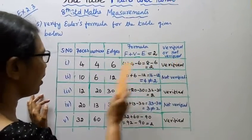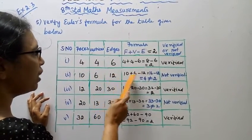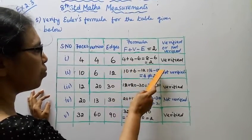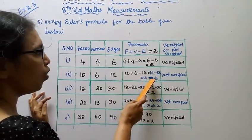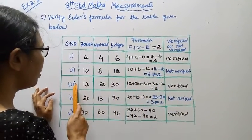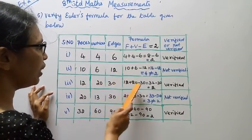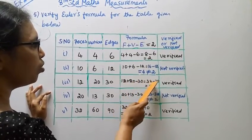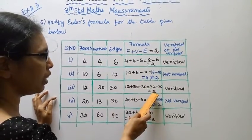Second solution: 10 plus 6 minus 12 equals 16 minus 12 equals 4. The answer is 4, which does not equal 2, so this is not verified. Third: 12 plus 20 minus 30 equals 32 minus 30 equals 2, which is verified.